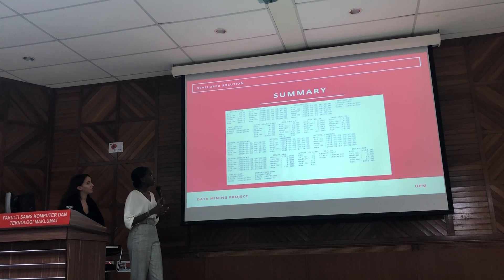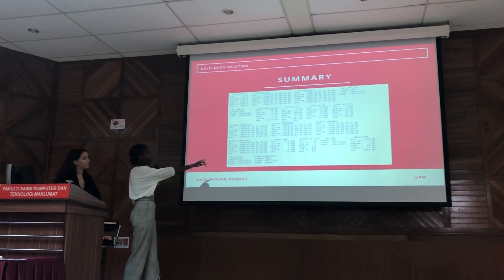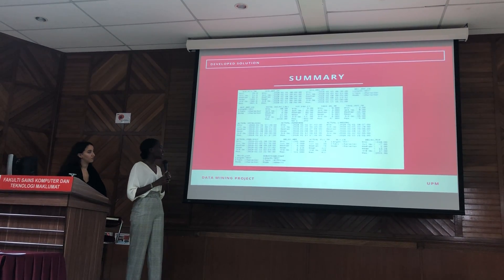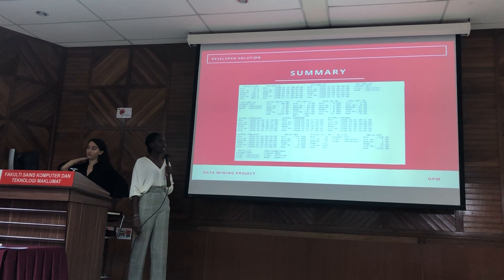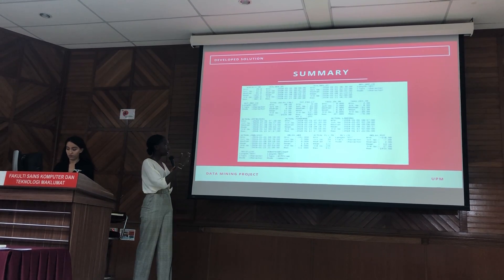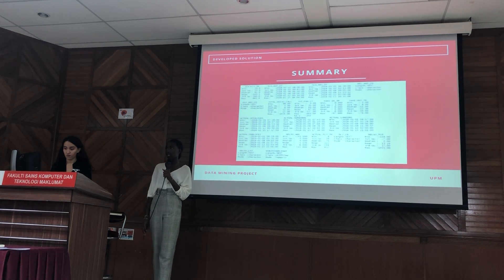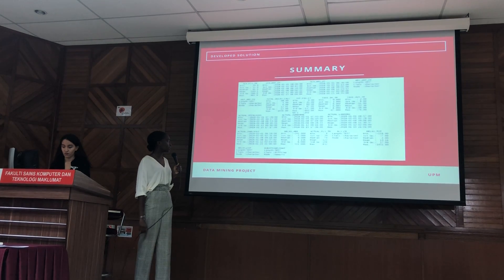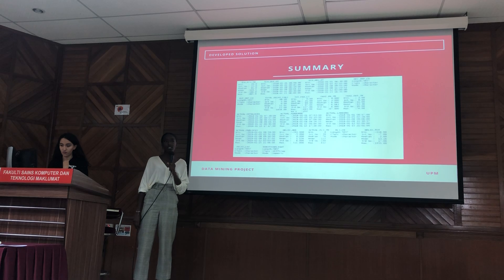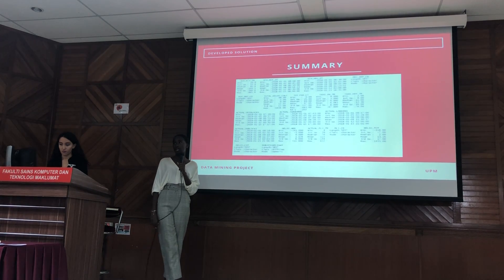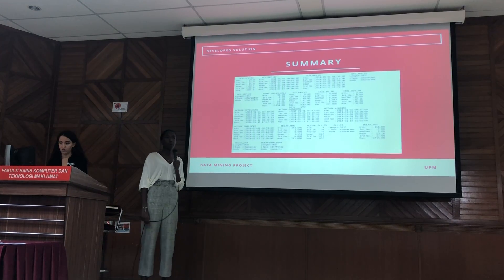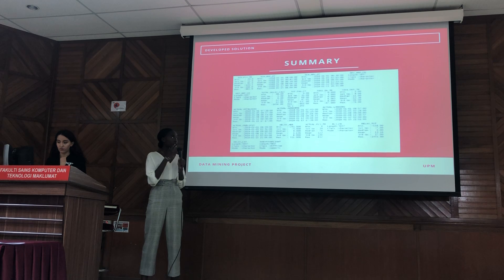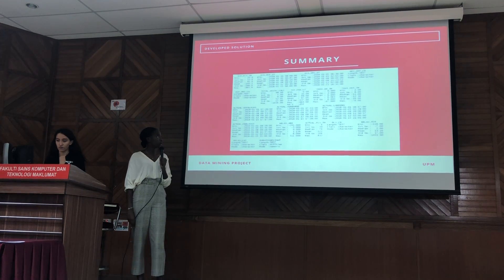The four new variables are: the delay code, where we gathered all the delay codes — there were actually four delay codes — into one column; the total delay, because the delays provided were only for the departure and not for the whole flight; a delay category indicating no delay, small, medium, big, or very big delay; and finally the flight duration, as this was not found in the original dataset.